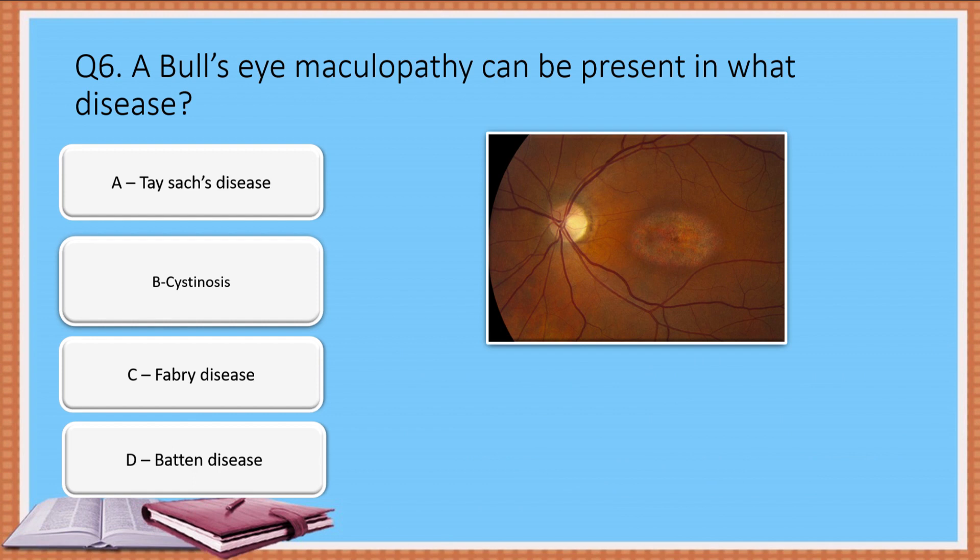Question 6: Bull's eye maculopathy is seen in which of the following conditions? Option A: Tay-Sachs disease. Option B: Cystinosis. Option C: Fabry disease. Option D: Batten disease.